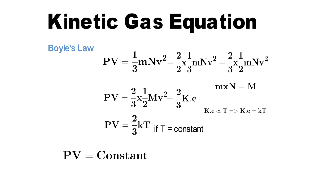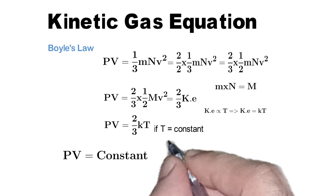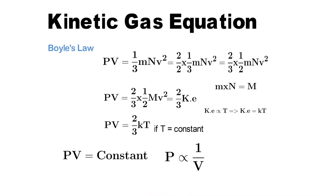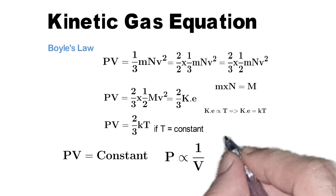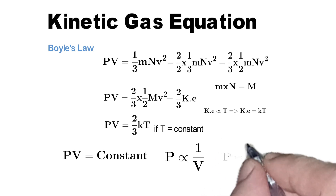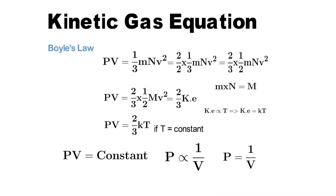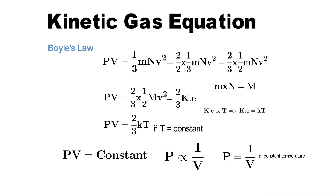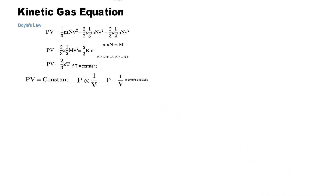What does this mean? If we keep the temperature constant, then pressure is inversely related to the volume of the gas. If we increase pressure, the volume will decrease. And if we increase the volume, the pressure of the gas will decrease.